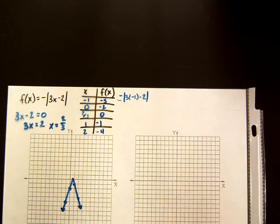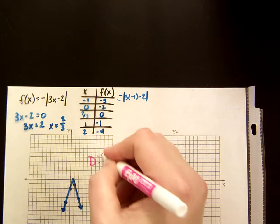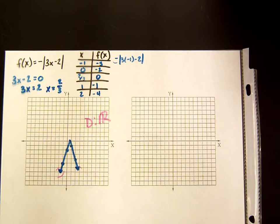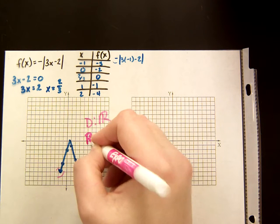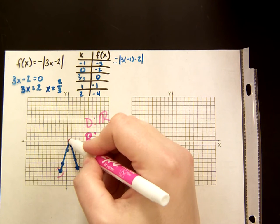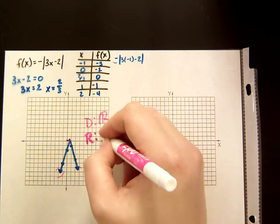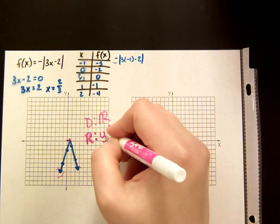The graph still makes a V, but this time it's upside down, which does affect your range. Your domain is still all real numbers because left and right your x's go on forever. But your range: it doesn't go above 0 on the y-axis, so your y's are less than or equal to 0.